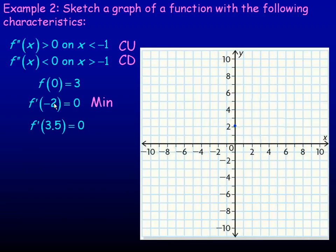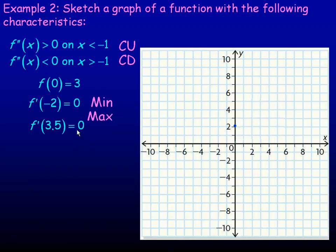Since x equals negative 2 is less than negative 1, the graph is concave up there. If we have a critical point where the graph is concave up, that means there's a local minimum point at x equals negative 2. And x equals 3.5 is on the interval where x is greater than negative 1, so the graph is concave down there — meaning there's a local maximum point at x equals 3.5.